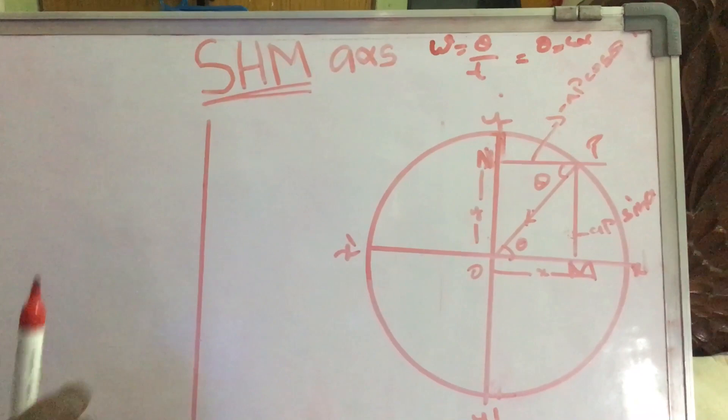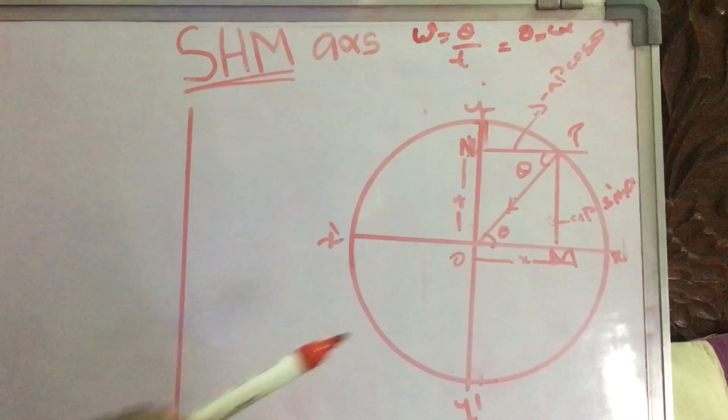One represents the x-axis, one represents the y-axis. We have taken AP sin theta, minus AP sin theta, minus AP cos theta, and we have represented two lines.